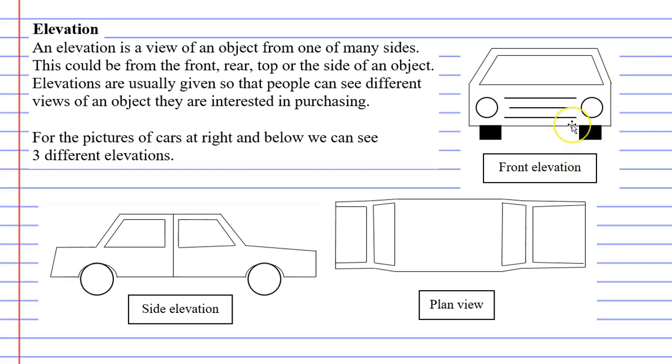Here I've drawn a car, and I've shown you some different elevations. We have our front elevation, which is the front of the car. We have a side elevation, the side of the car. And we also have what's called a plan view, which we mentioned earlier. A plan view is just basically a bird's eye view.